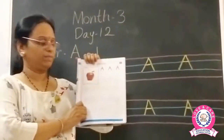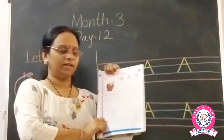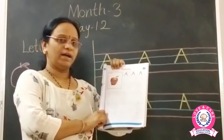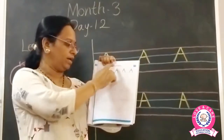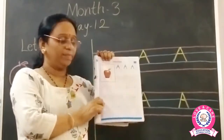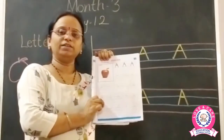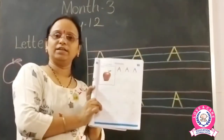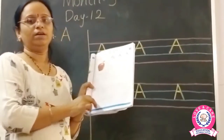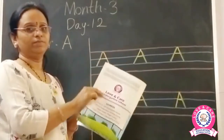Next page. Next page पे क्या है? किसे letter A लिखना है? Race and write letter A — A for apple. So यहाँ पे हमें क्या करना है? Dot को join करके letter A बनाना है. So look, turn the page.